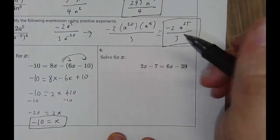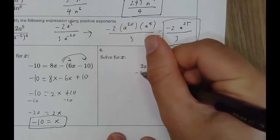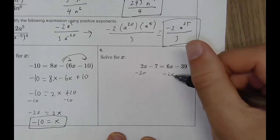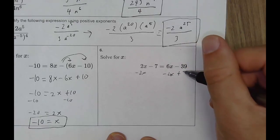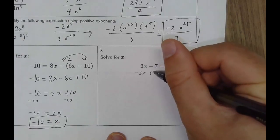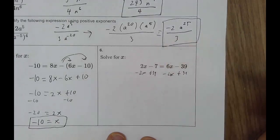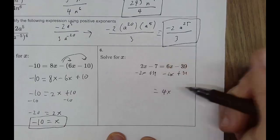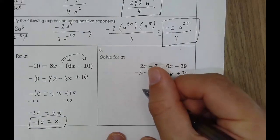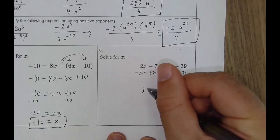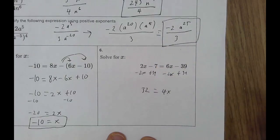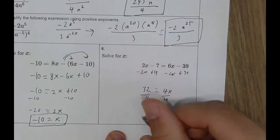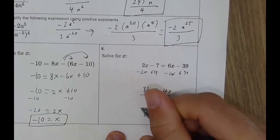Solve for x. Subtract 2x from both sides and add 39 to both sides at the same time. We get 4x equals 32. Divide both sides by 4: x equals 8.